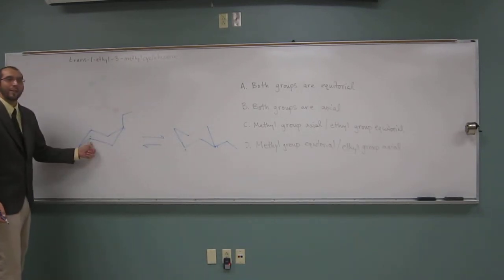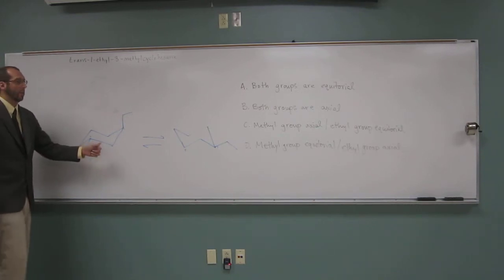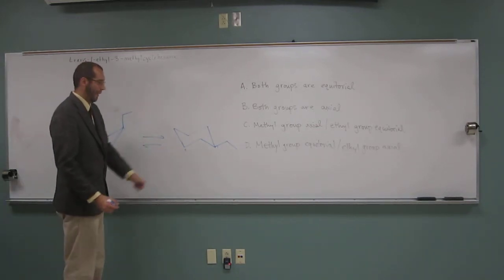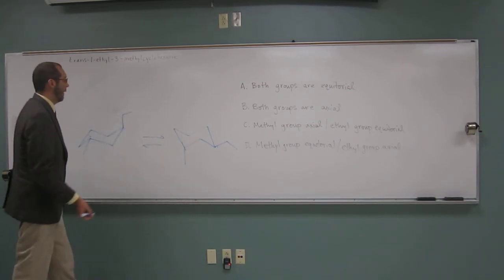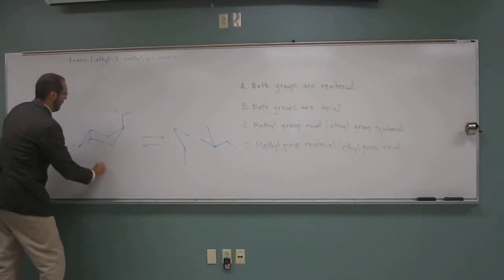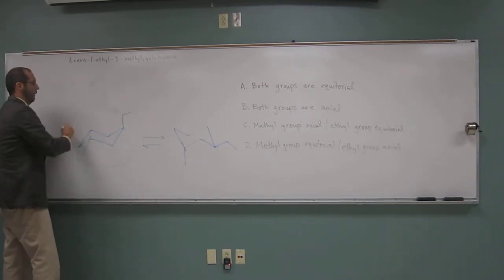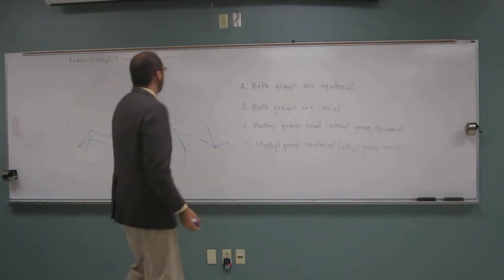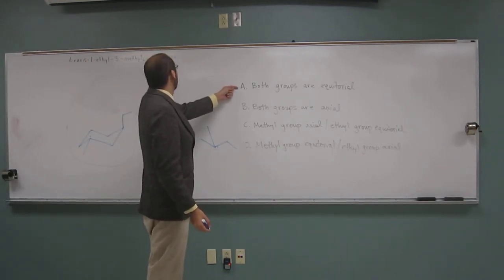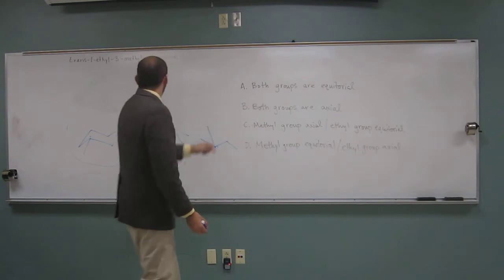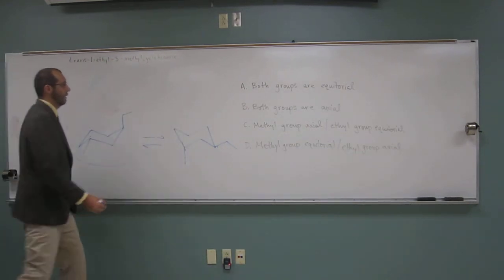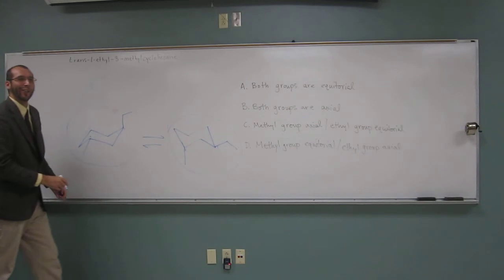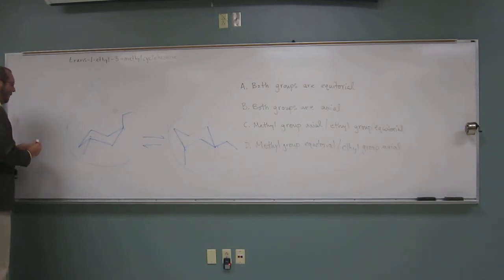So the methyl group's down equatorial, so what is it going to be over here? Down axial. Down axial, okay? And you've already answered the question, right? So this is the more stable form here. Okay, so let's go here. Are both groups equatorial in the most stable form? Was that the most stable form? I'm sorry, I messed up. That's the most stable form. That was a trick question, right? Tricking you out.